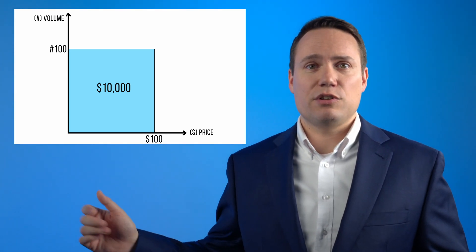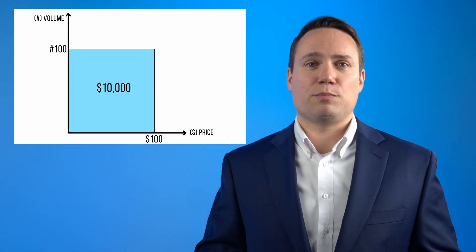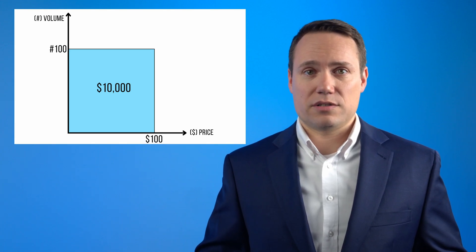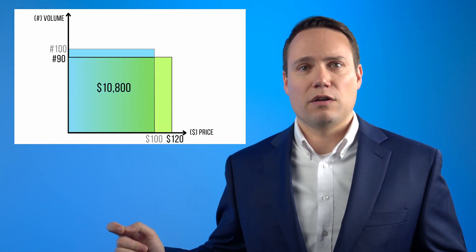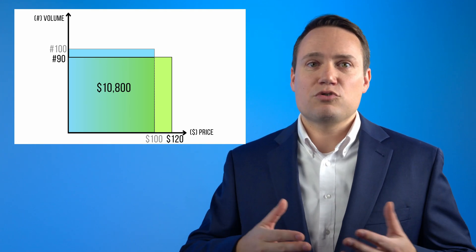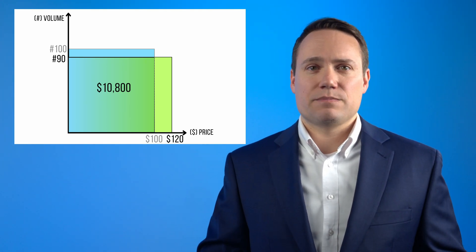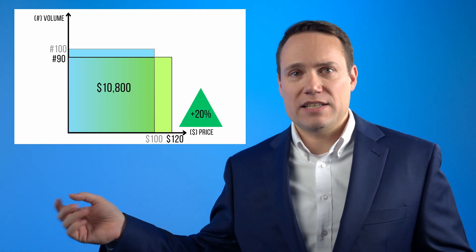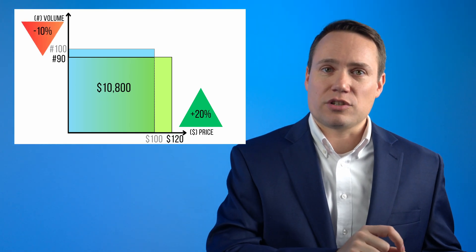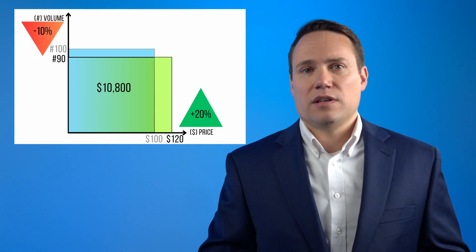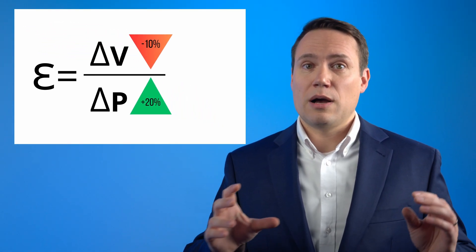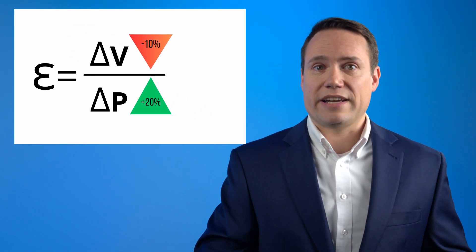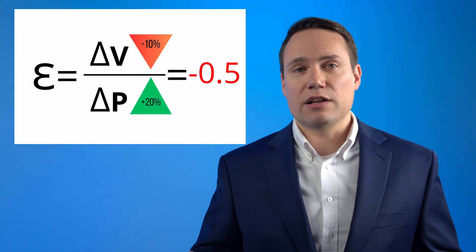Let's look at a simple example. A company sells 100 units of a product at $100 per product, so it has revenues of $10,000. Let's assume this company increases its price to $120, and because of this price increase, volumes drop to only 90 units. So a price increase of 20% leads to a volume reduction of 10%. The price elasticity in this case is minus 10% over plus 20%, which equals negative 0.5.